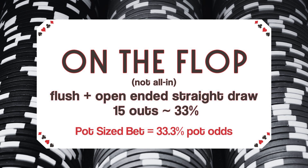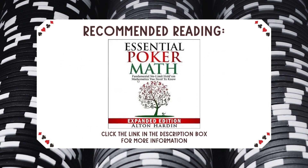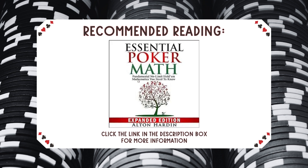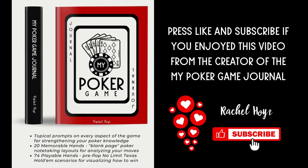Of course, if you managed a flush draw and open-ended straight draw on the flop — such as king, queen, jack, ten of hearts — that would give you 15 outs or 33% equity in the hand, making a pot-sized bet on the flop, whether or not it's all-in, essentially a wash of an EV decision — they're equal, so it's neither plus nor negative. For more help understanding all of this, I highly recommend Alton Hardin's Essential Poker Math. Thanks for watching — hope you enjoyed this video, and have fun playing Texas Hold'em.